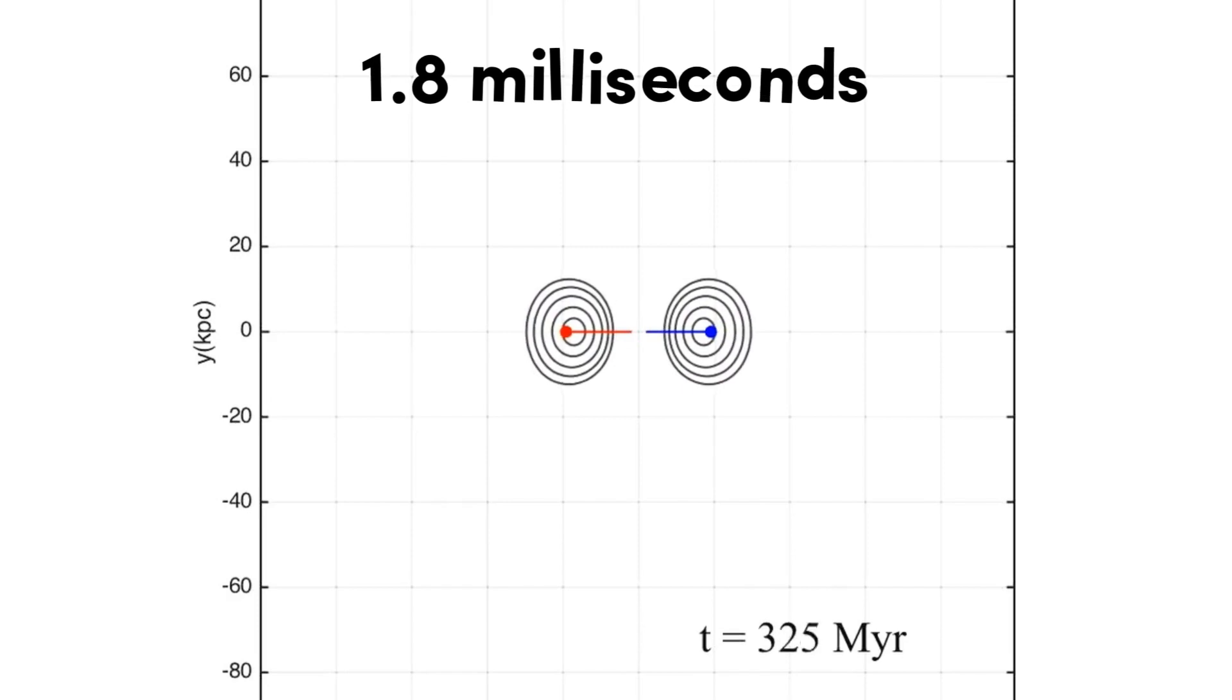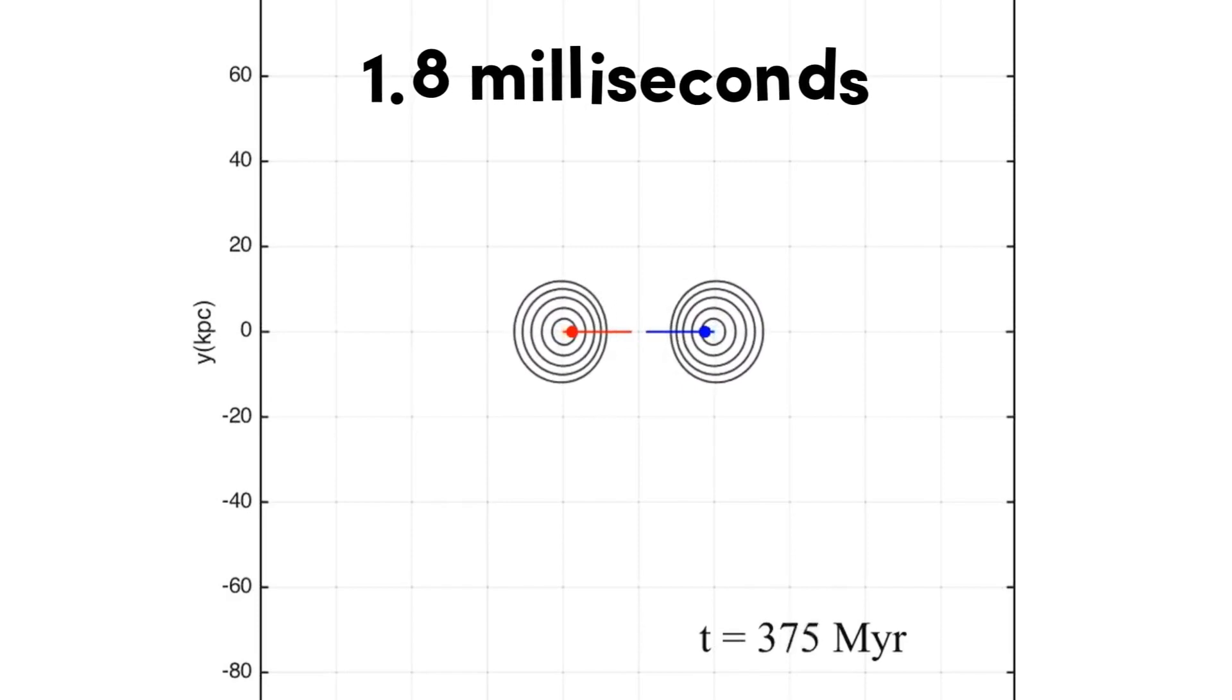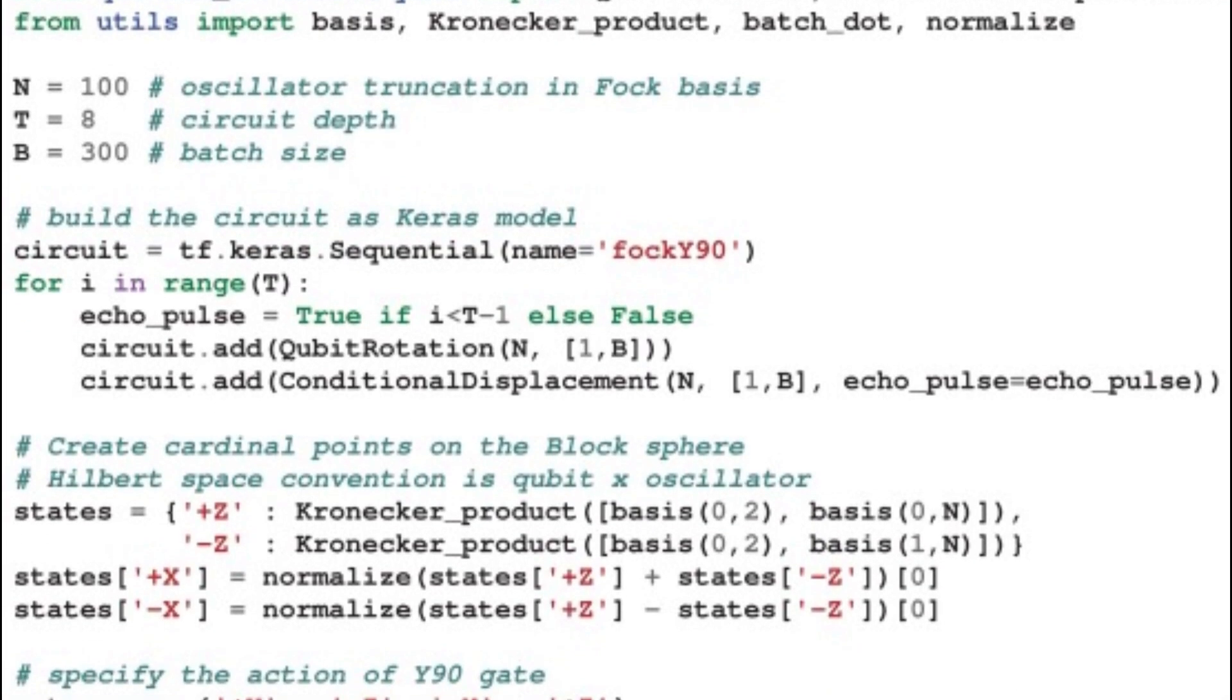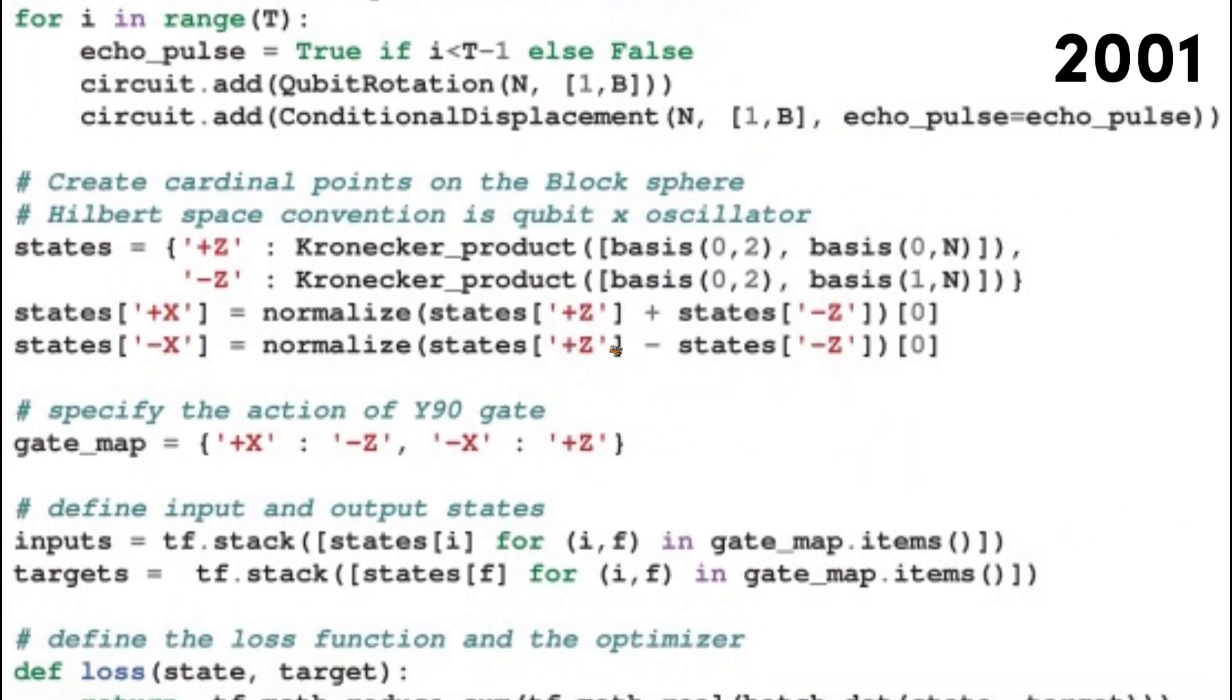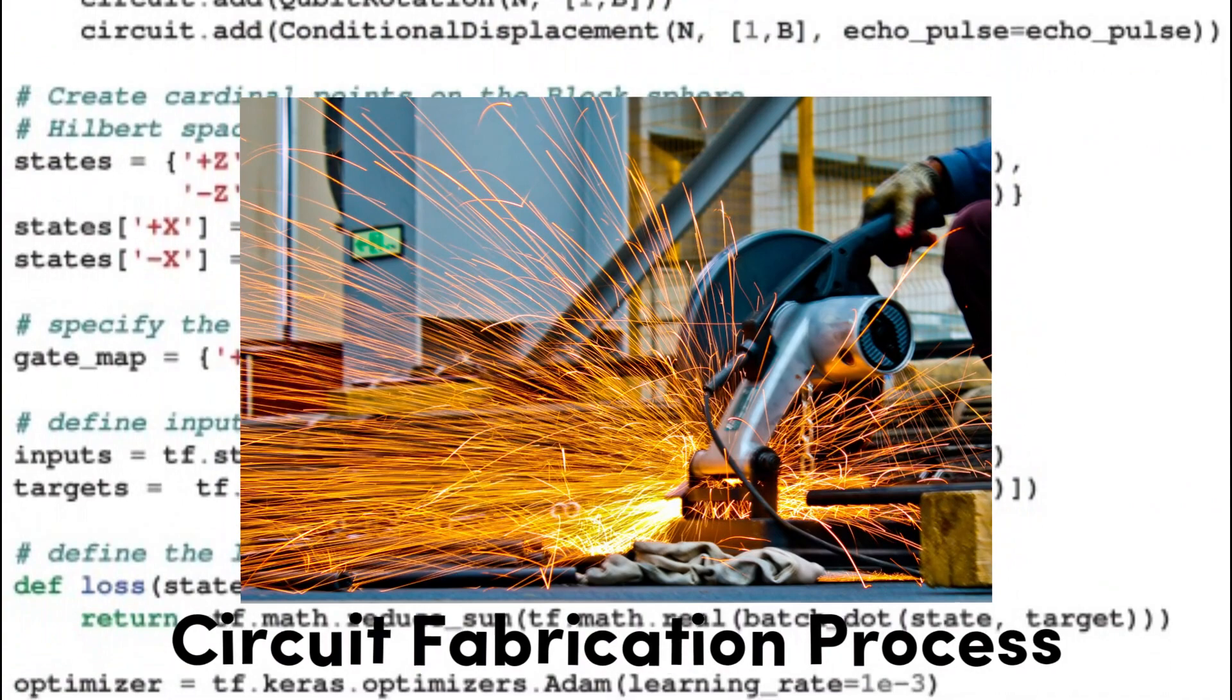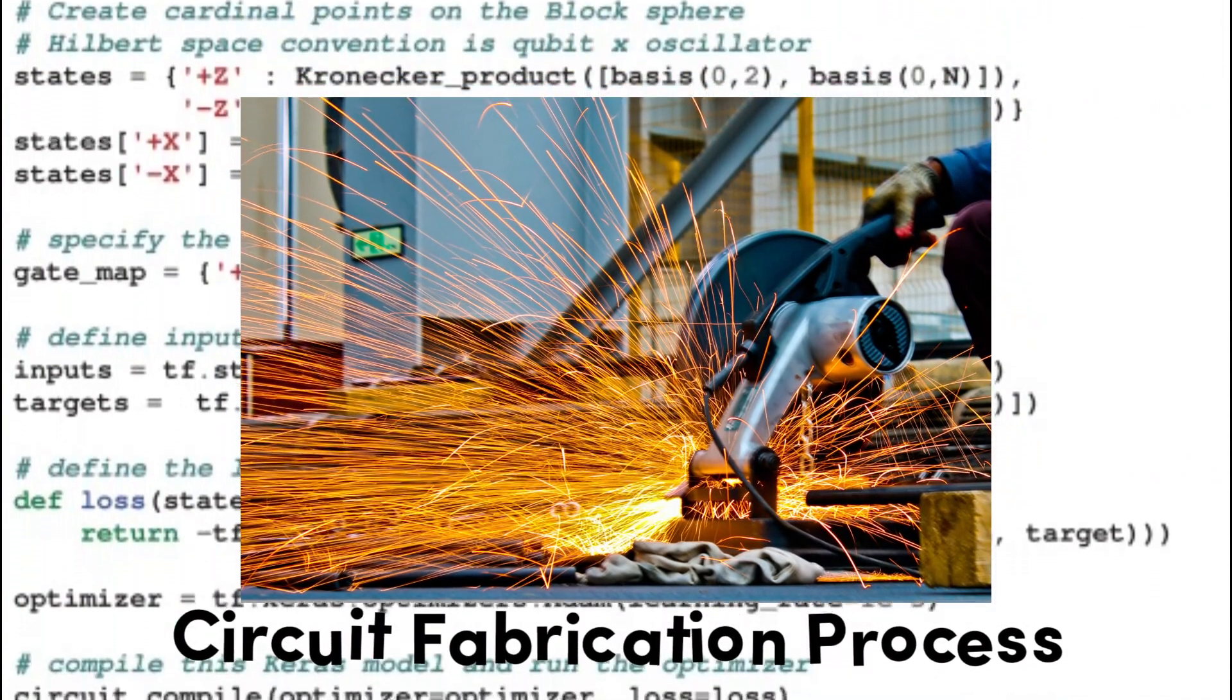This is an impressive span for a qubit operating on the quantum level. The research team used a QEC code from 2001, but improvements to the code and upgrades to the quantum circuit fabrication process made a significant difference.